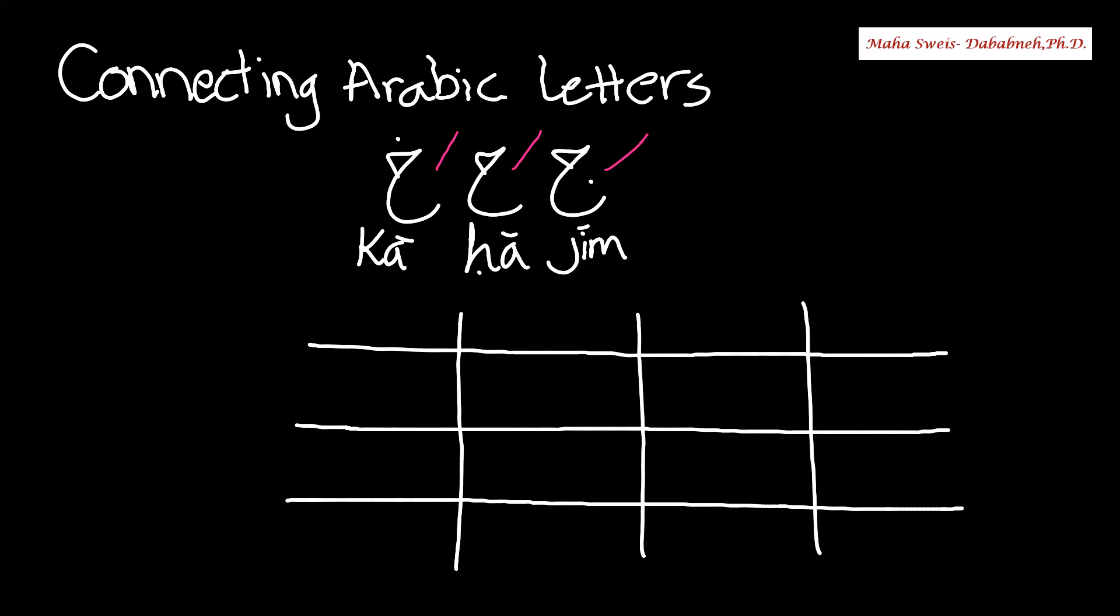As you know, we have four shapes for each letter: middle, connected and not connected, and connected. Let's start with the first one. We call it Jim. Jim. It's like a triangle.